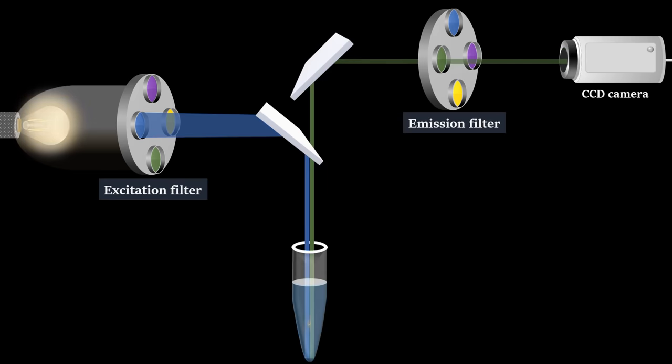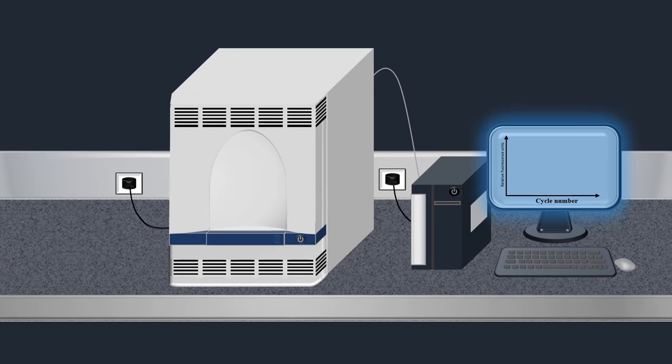In each PCR cycle, light from excited fluorophore can be detected by the CCD camera, which converts the light that it captures into digital data. This method is known as real-time PCR, which allows the monitoring of the progress of the PCR reaction as it occurs in real-time.